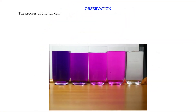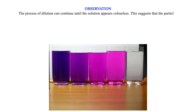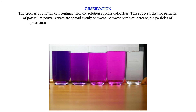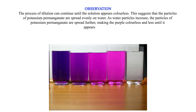Observation: The process of dilution can continue until the solution appears colorless. This suggests that the particles of potassium permanganate are spread evenly in water. As water particles increase, the particles of potassium permanganate are spread further, making the purple color less intense until it appears colorless.